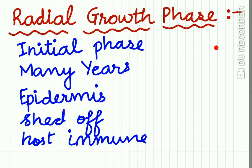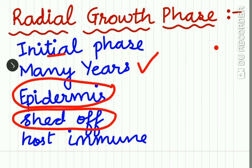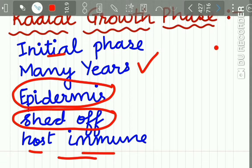In the radial growth phase, this is the initial phase and it occurs for many years. The lesions spread in the epidermis, melanoma cells are shed off from the skin, and the host immune mechanism plays a major role. The neoplastic cells that try to penetrate the basement membrane are destroyed by the host immune mechanism.